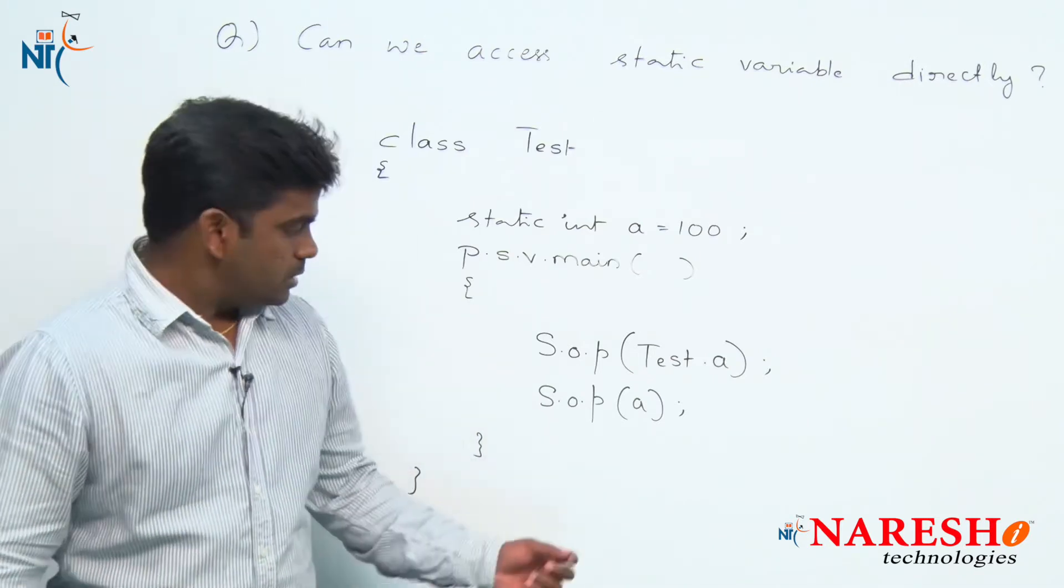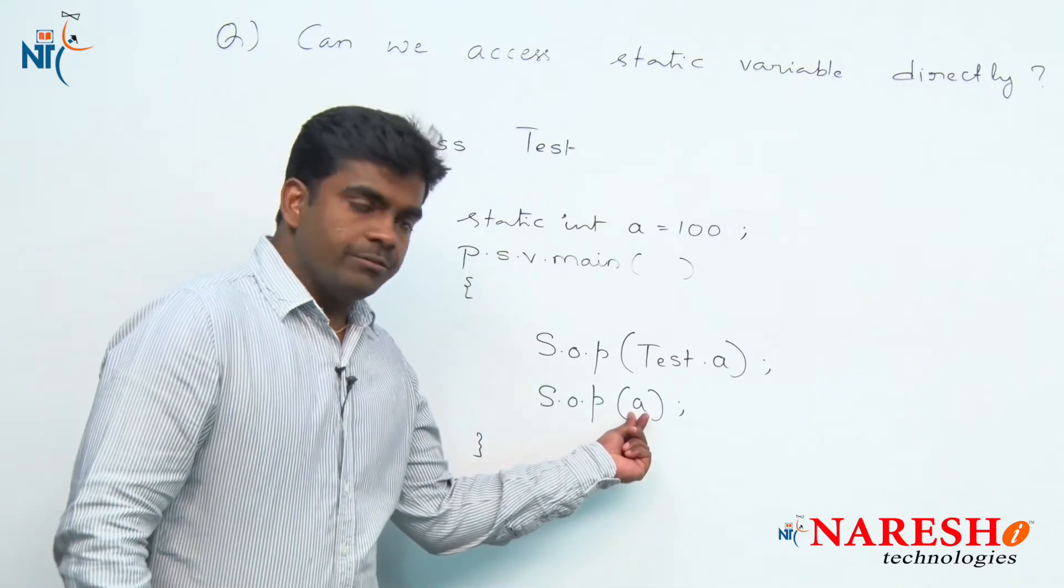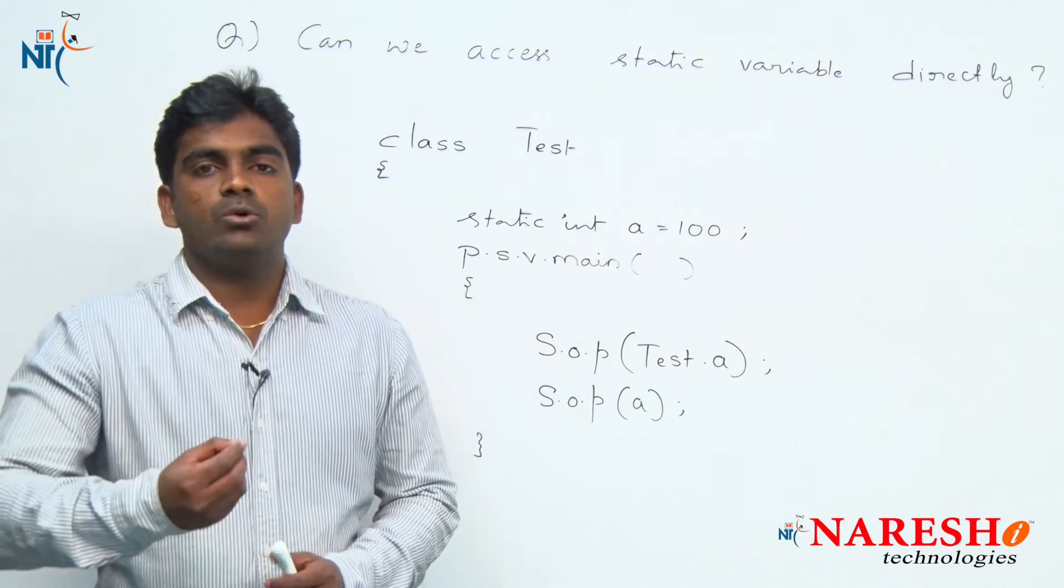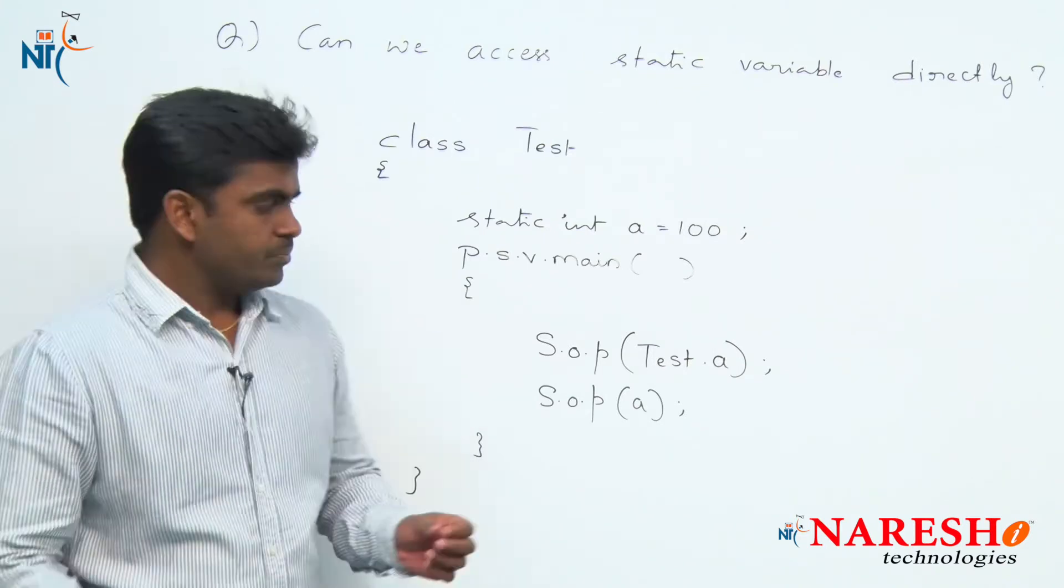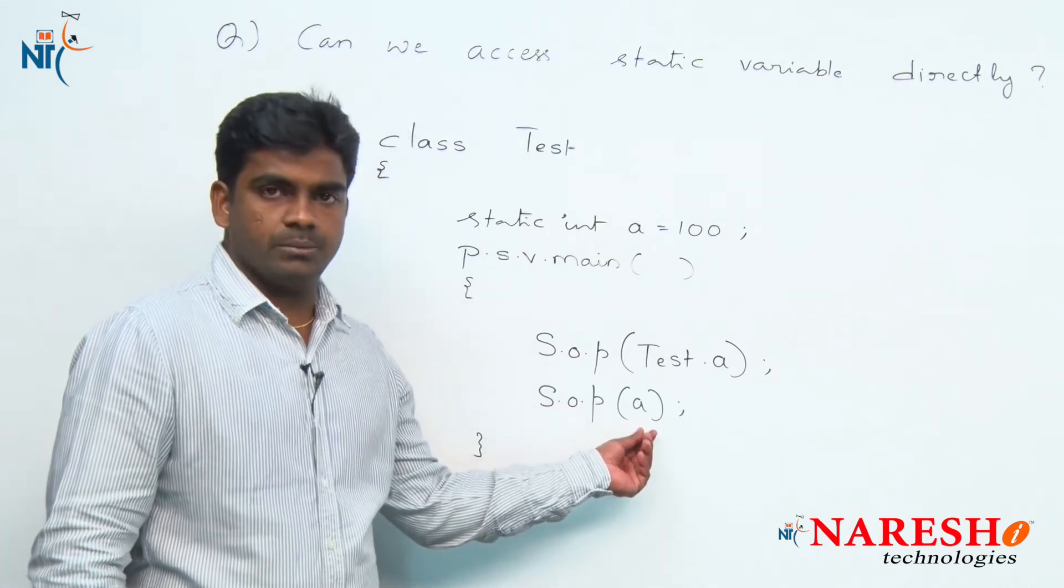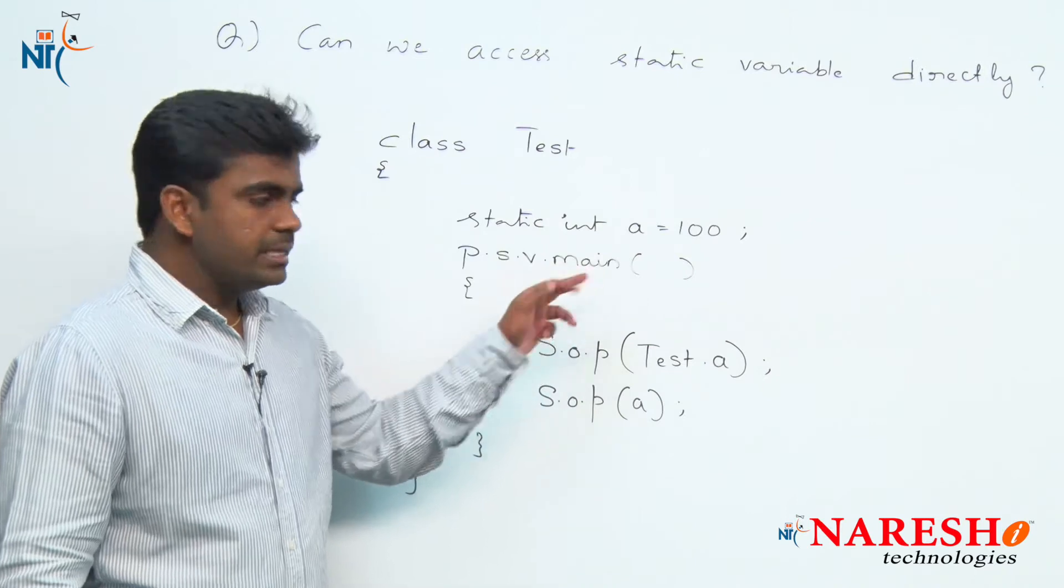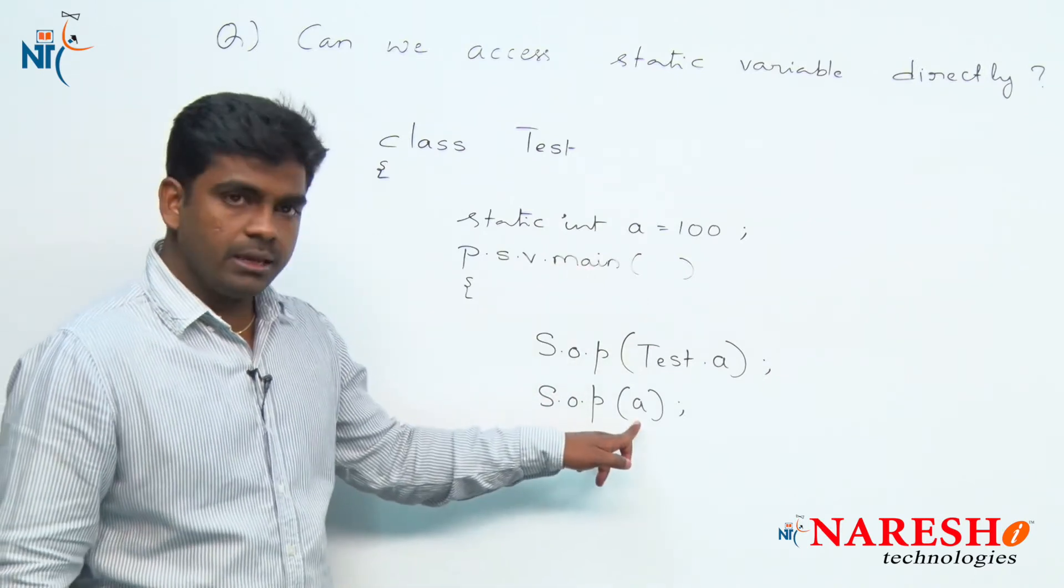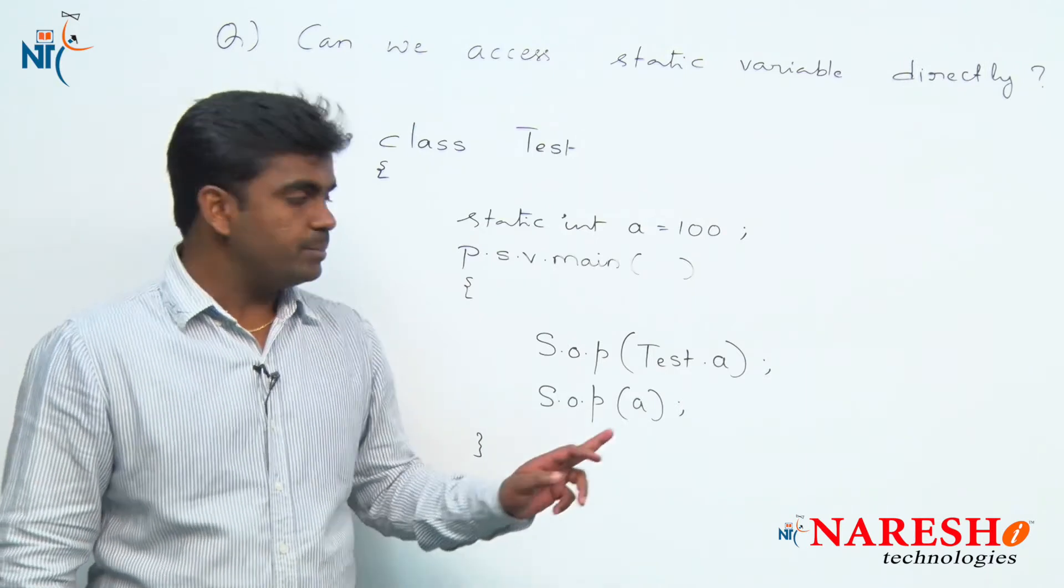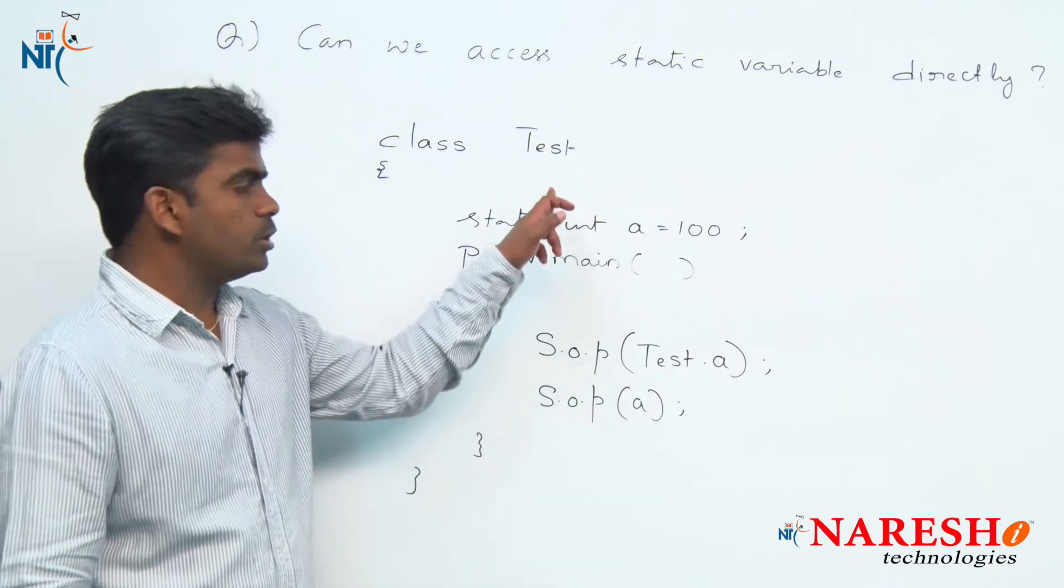Actually, accessing a variable directly means what? Your intention is looking for local variable first. JVM also looks for local variable. But inside the main method, is there any local variable with the name 'a'? No. If local variable is not present, that means